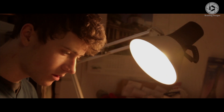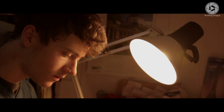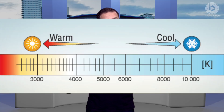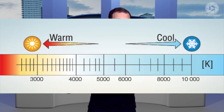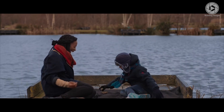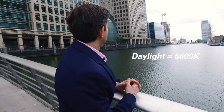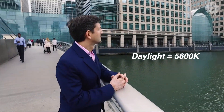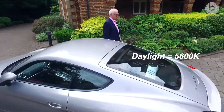Low color temperatures are more yellow and high color temperatures are more blue. The light that you see outside on a cloudy day is known as daylight and has a color temperature of 5,600 Kelvin.